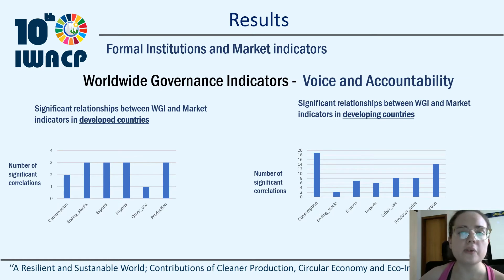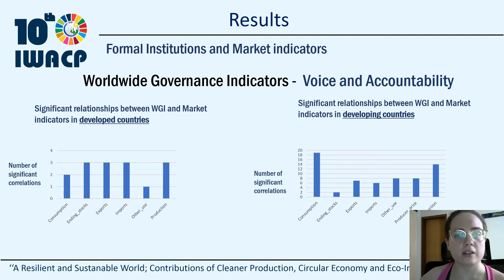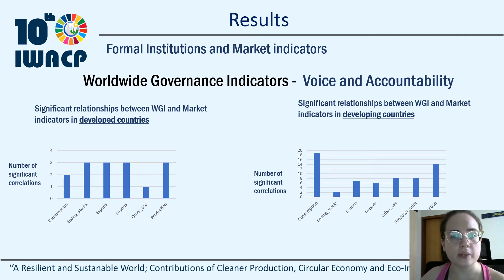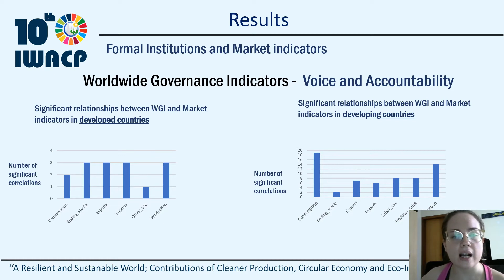The Global Governance Index measures country governance across six dimensions. Voice and accountability measures how well citizens are able to participate in their country's government selection, access freedom of expression, association, and free media.